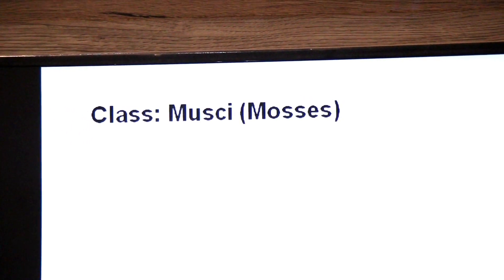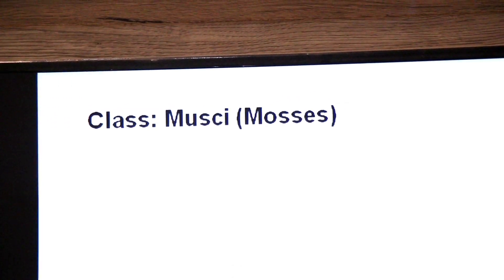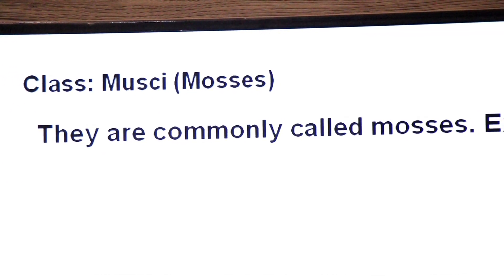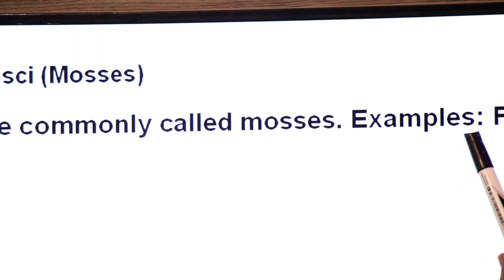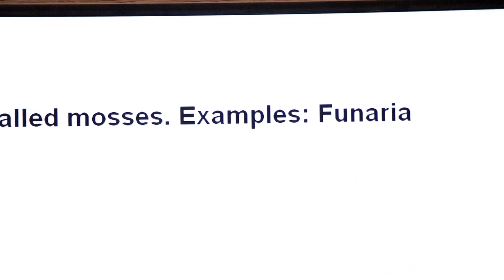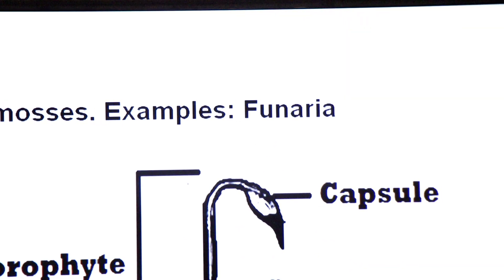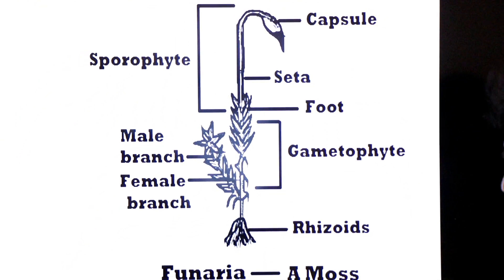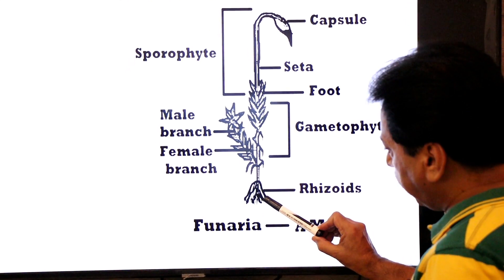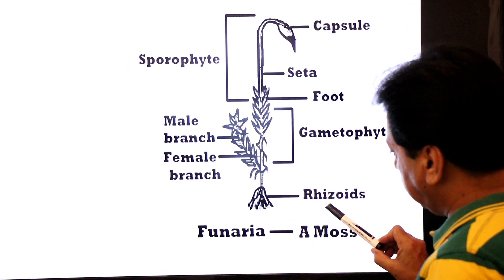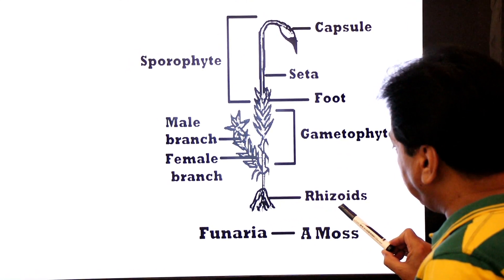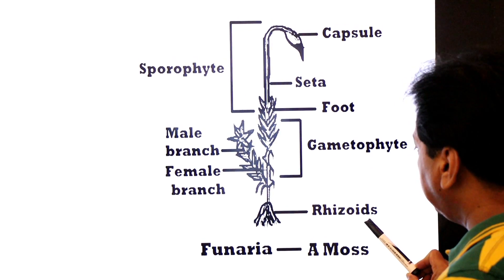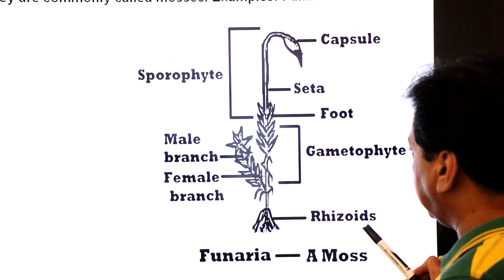Class Musci — whose members are known as mosses — are commonly called mosses. An example is Funeria. Looking at the diagram of Funeria, you can see multicellular rhizoids. In mosses, rhizoids are multicellular.